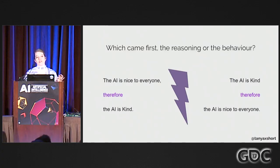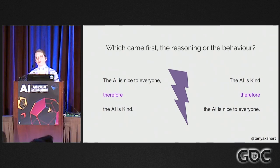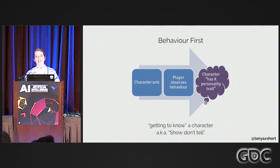Normally we assume that reasoning drives behavior because that's how we experience our world. But you might want to consider the opposite for your game. In Moon Hunters, the player's behavior — such as being nice to everyone — was measured and determined what personality trait was assigned to them, such as compassionate, retroactively explaining their behavior through their motivation. Even if your engine starts with reasoning and then goes into behavior, it might make sense for the player to see it the opposite, or see it at the same time.